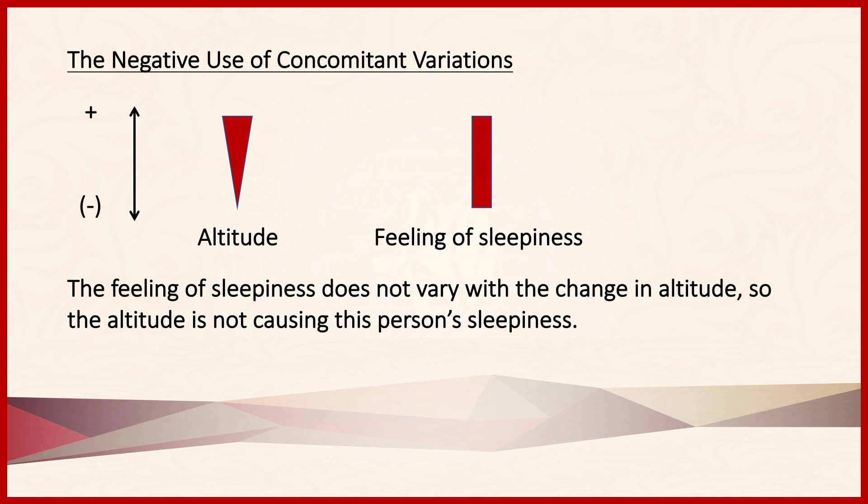The method of concomitant variations also has a negative use. Turning to an example from the previous lecture, here we have altitude increasing, but the feeling of sleepiness is not. So there is not a concomitant relationship between increased altitude and an increased feeling of sleepiness. This then shows the negative use of the method.